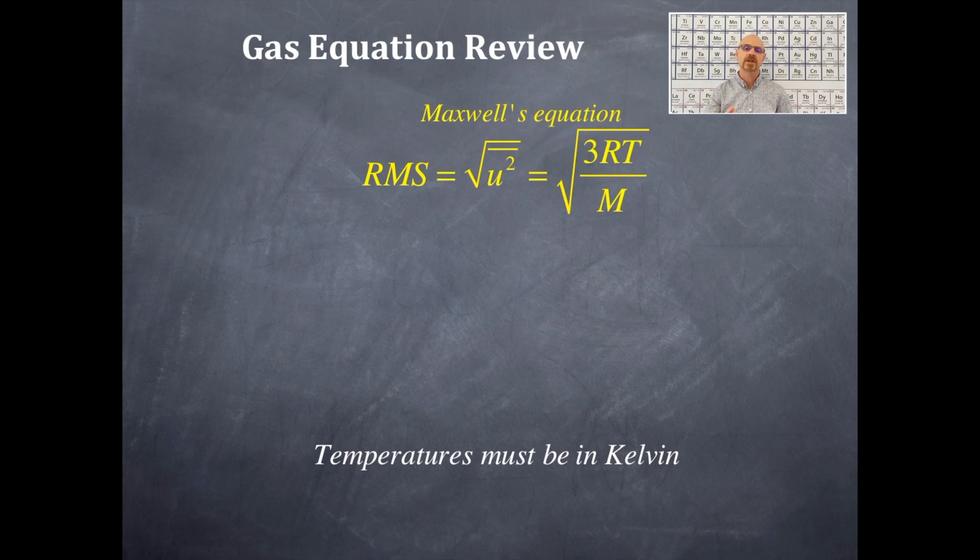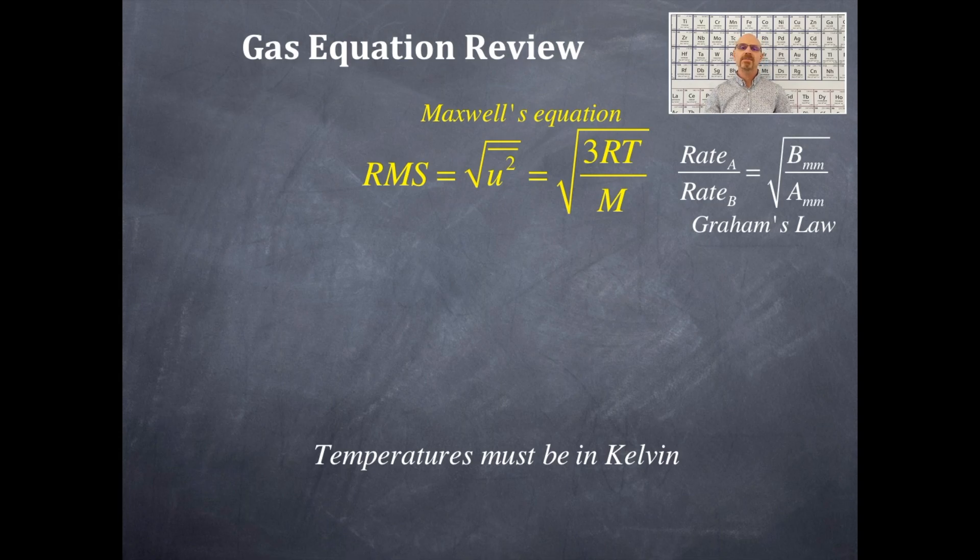That is Maxwell's equation. We're going to figure out how to use that later on in this unit. Here's the next one, which is Graham's law. Graham's law relates the rate, that is the speed, at which one gas is going compared to the rate at which another gas is going. So the rate of gas A compared to the rate of gas B is equal to the square root of the inverse relationship of their molar masses or their densities.